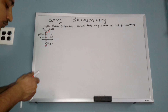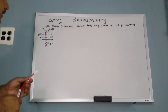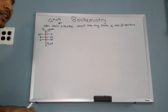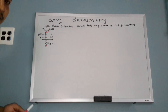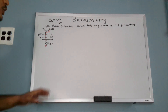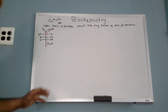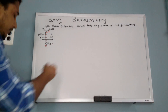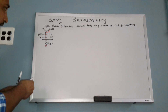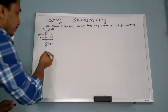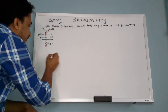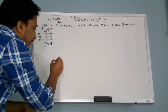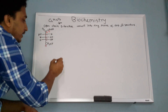Now you have to convert it into a ring form. Why? Because inside the cell, glucose and fructose are not in open chain form — they are in ring form. So look at what happens here. This is your carbon number one.